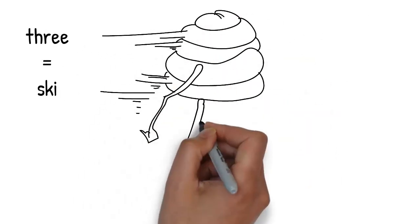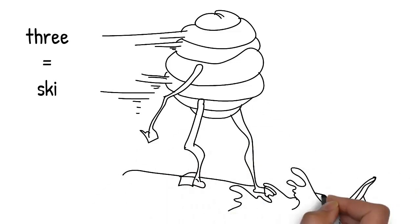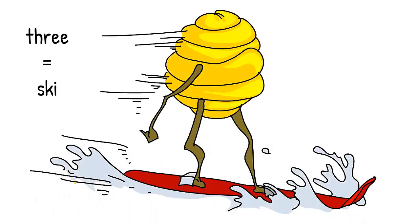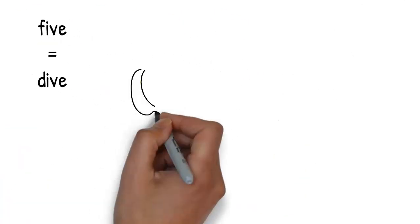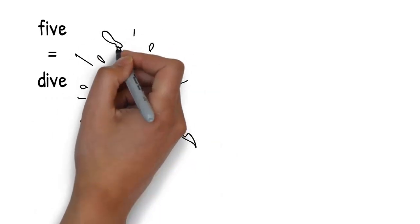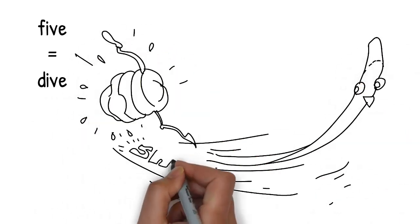The hive stands up on legs and jumps onto a single snow ski. Ski reminds you of the number three. The ski wants to escape from the hive and it takes a large dive. Dive rhymes with five.